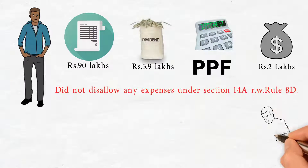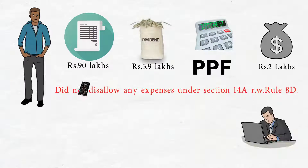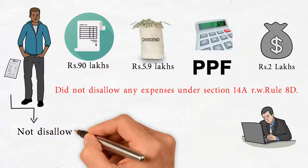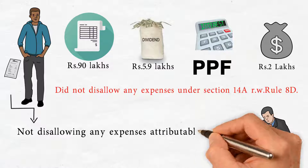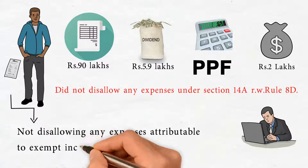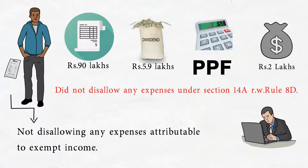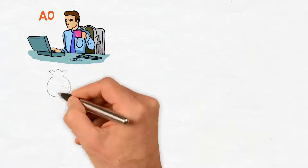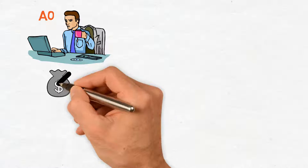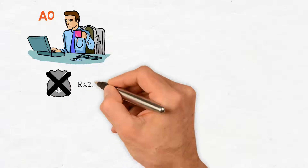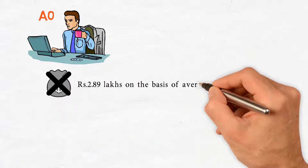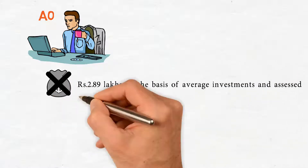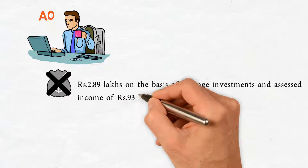The AO issued a show cause notice for disallowing expenses attributable to exempt income. The AO disallowed Rs. 2,89,000 on the basis of average investments and assessed income of Rs. 93,00,000.